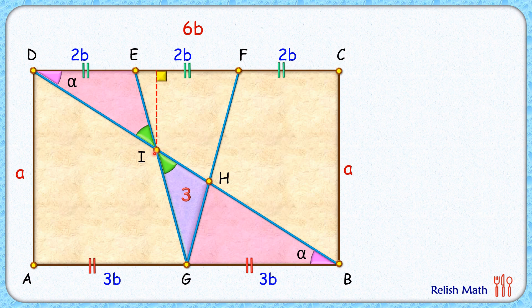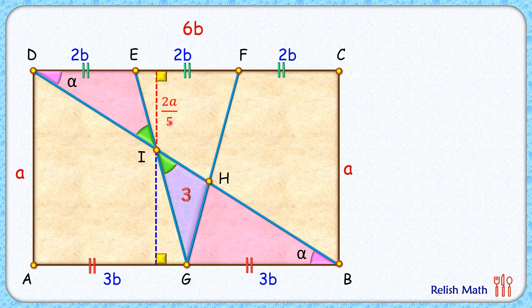Since the triangles are similar, the ratio of the sides equals the ratio of the heights. The red and blue line segments will have the same ratio as DE to GB, which is 2 to 3. The full height is 'a' centimeters, so in ratio 2:3, this gives heights of 2a/5 and 3a/5. Now let's check the second triangle.